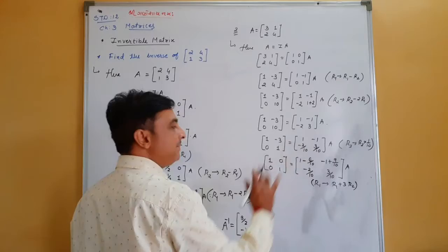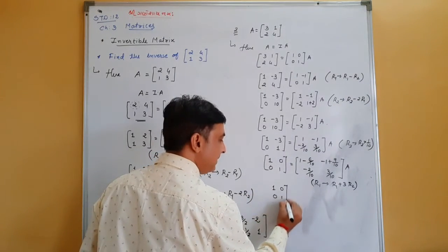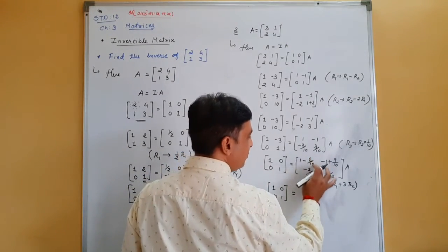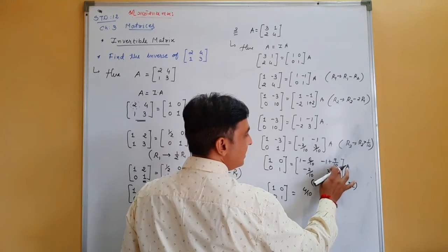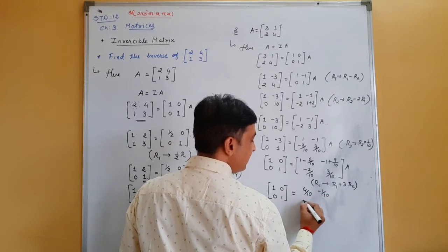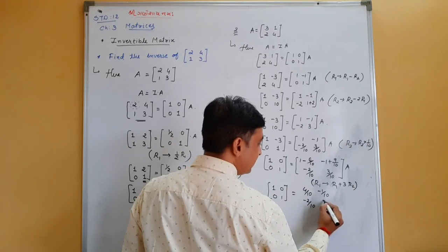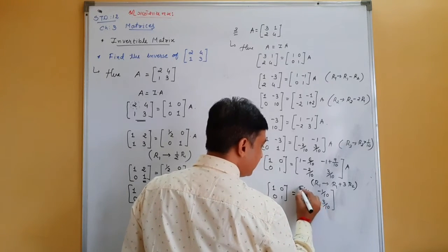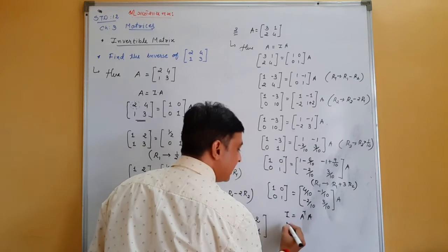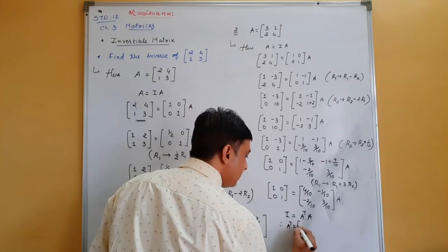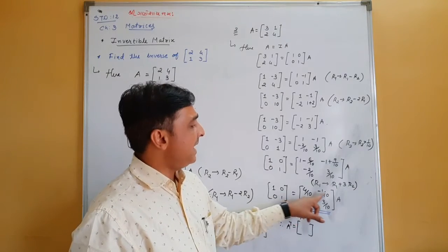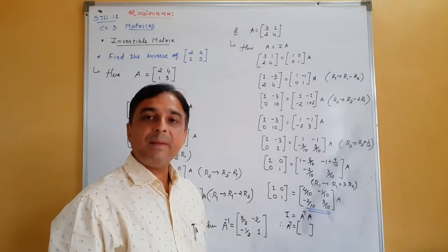Now multiply row 2 by 3 and add to row 1 (R1 = R1 plus 3R2) to make the -3 become zero. Left side becomes [1,0;0,1] — the identity. Right side: row 1 becomes 1 plus 3 times(-2/10) = 4/10, and -1 plus 3 times(3/10) = -1/10... simplified: [4/10,-1/10;-2/10,3/10]. Therefore A-inverse equals [4/10,-1/10;-2/10,3/10].